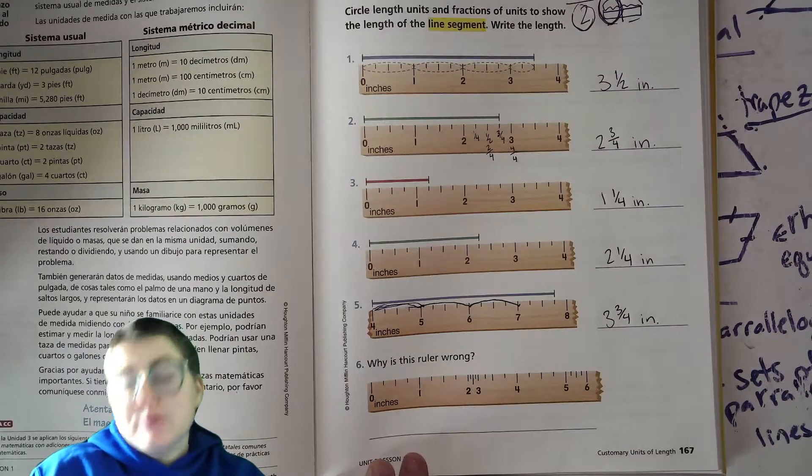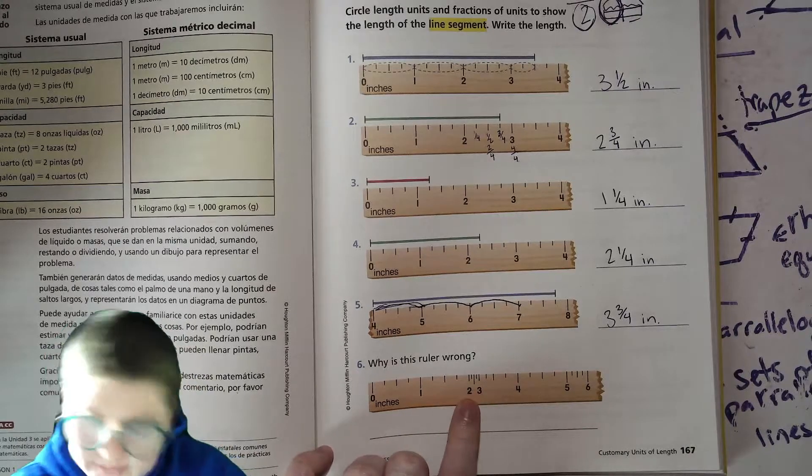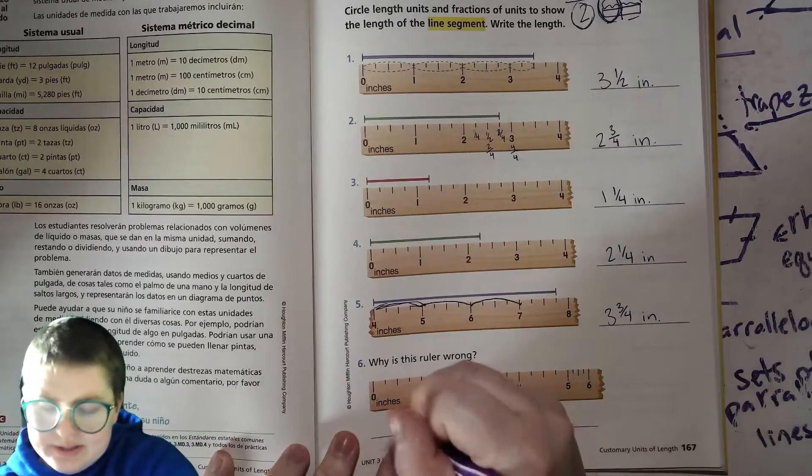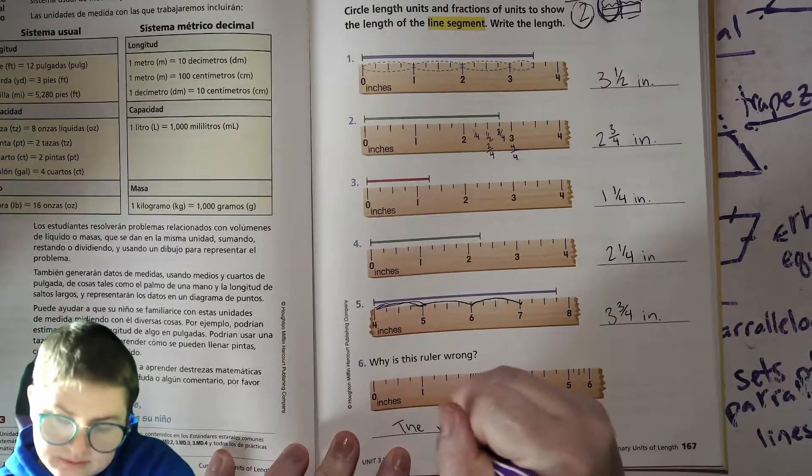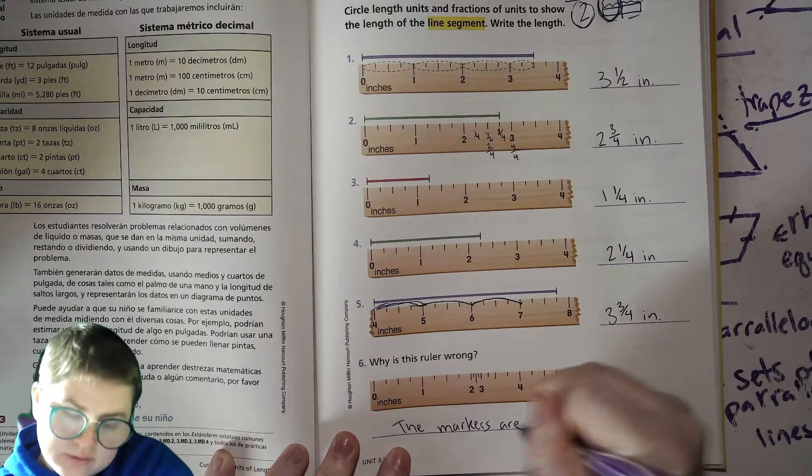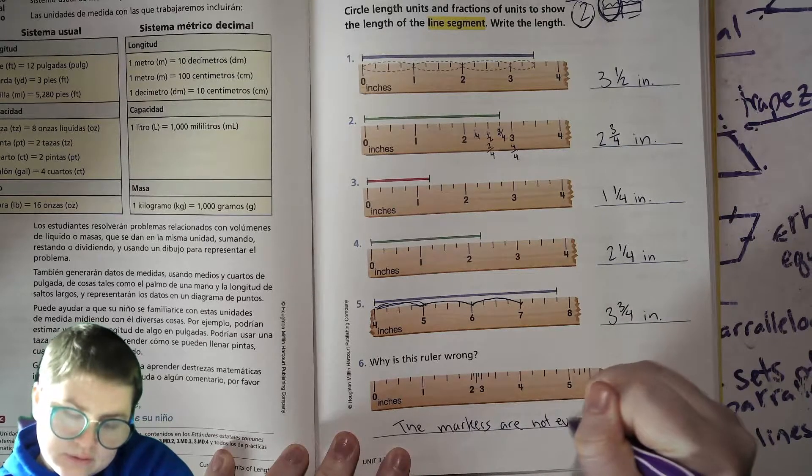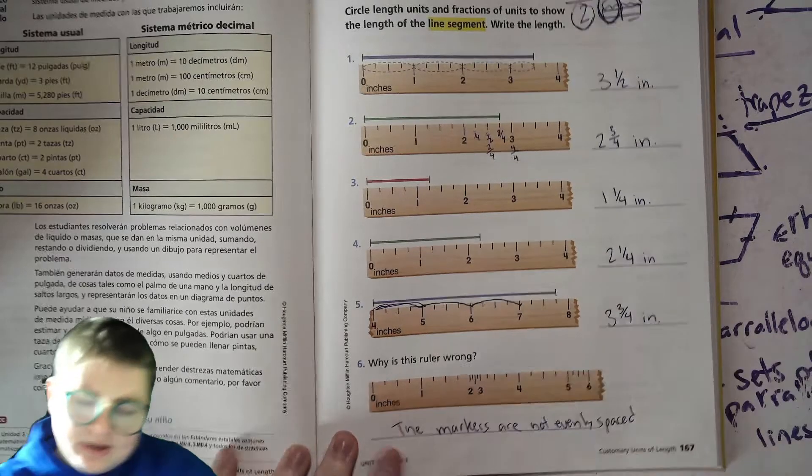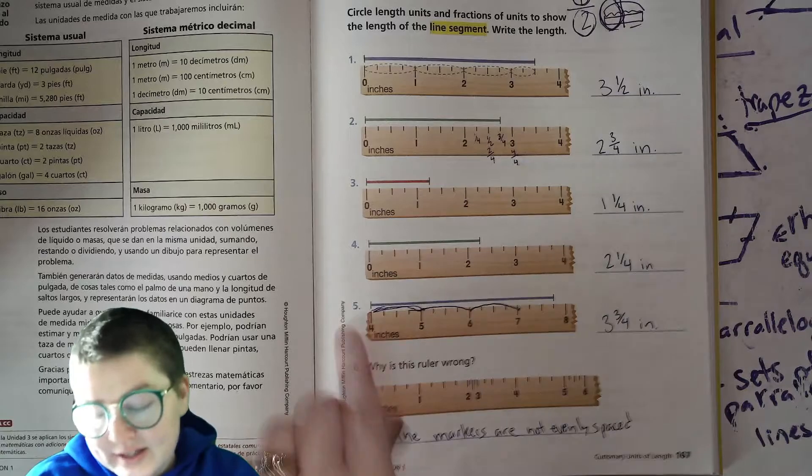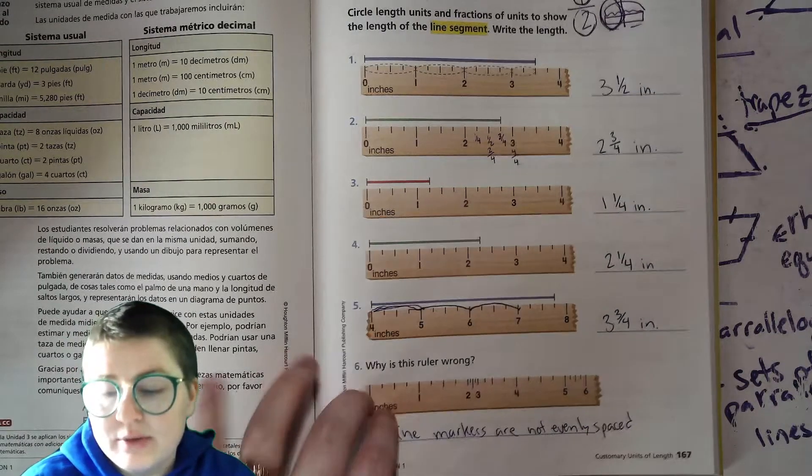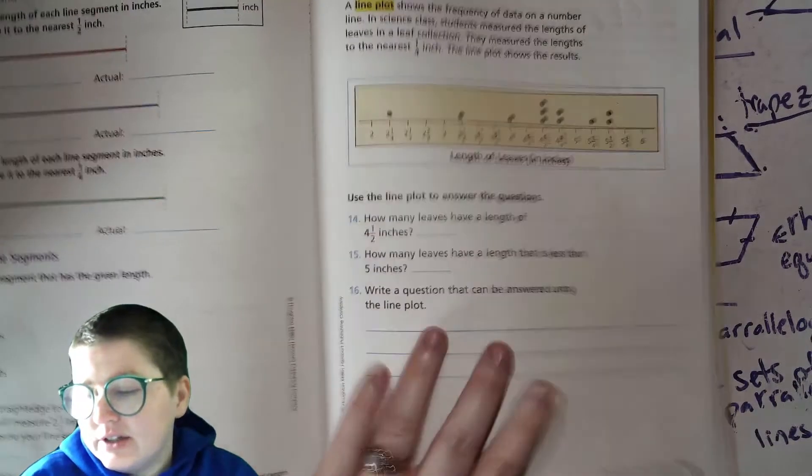Take a look at this ruler. What's wrong with it? The markers are evenly spaced. They're supposed to be indicating that distance of that inch, and that inch is consistent anywhere you go. It's not just something you make up.